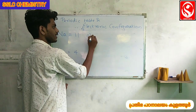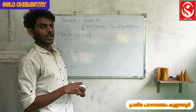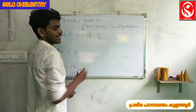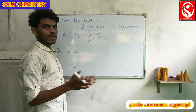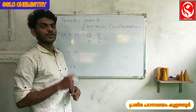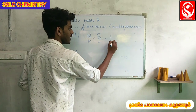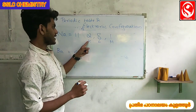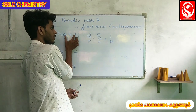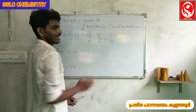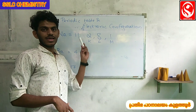For sodium: K shell has 2 electrons, L shell has 8 electrons. That gives us 2 plus 8 equals 10. Then we have one extra electron in the M shell. So the electronic configuration of sodium is 2, 8, 1. And 2 plus 8 plus 1 equals 11.